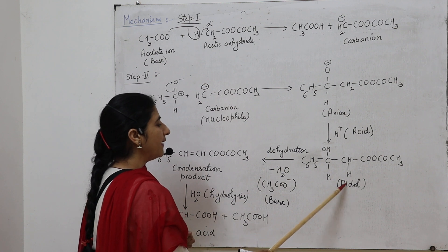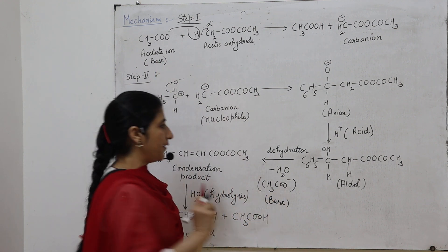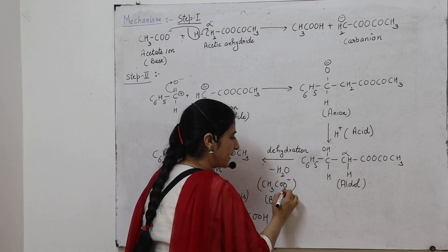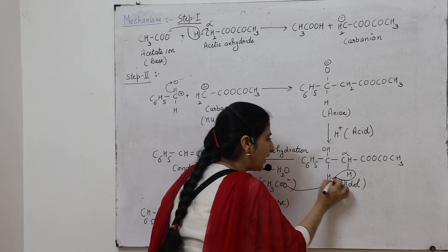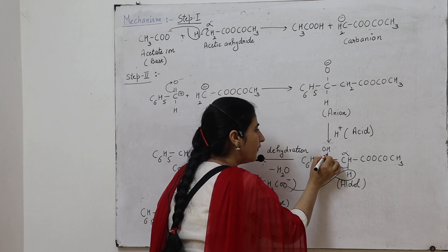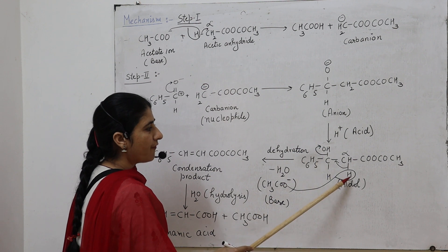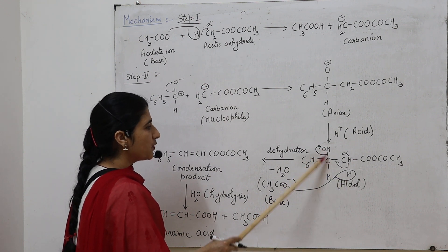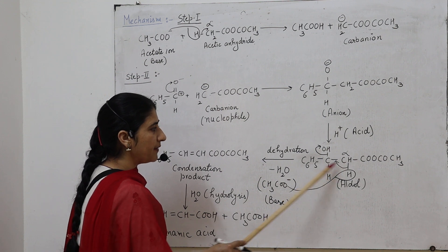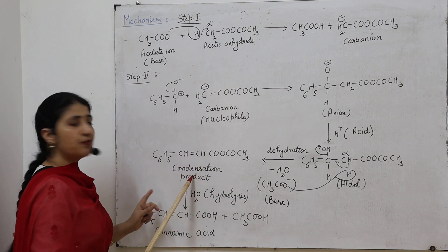This aldol product then reacts again with the base — the acetate ion — which abstracts the alpha hydrogen. The alpha carbon is the carbon next to the functional group. As a result, the carbon-hydrogen sigma electrons migrate, and OH⁻ leaves the beta carbon. This means there is loss of water — H from the alpha carbon and OH from the beta carbon — leading to formation of a carbon-carbon double bond between these two carbons, giving the condensation product.